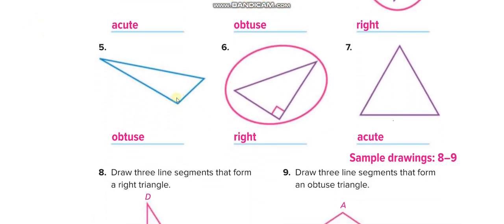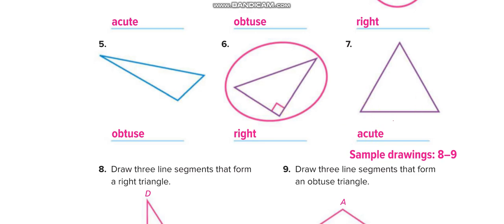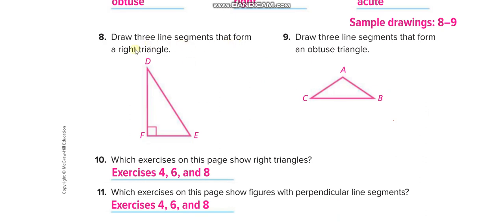Here again, one angle is more than 90 — obtuse. The next one is a right triangle, so we circle it for perpendicular lines. All three angles less than 90 — acute. For drawing exercises: draw three line segments to form a right triangle, and draw three line segments to form an obtuse triangle. Exercises 4, 6, and 8 show right triangles with perpendicular lines.